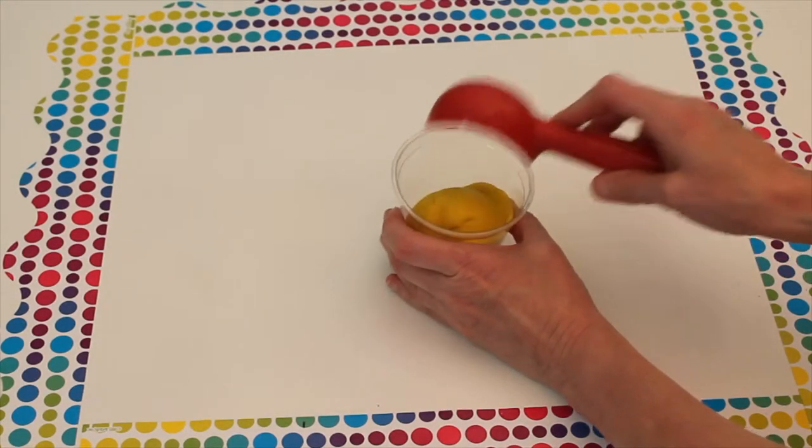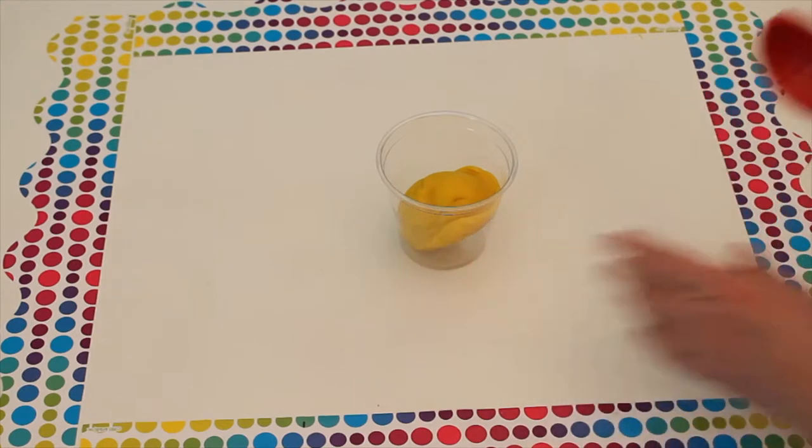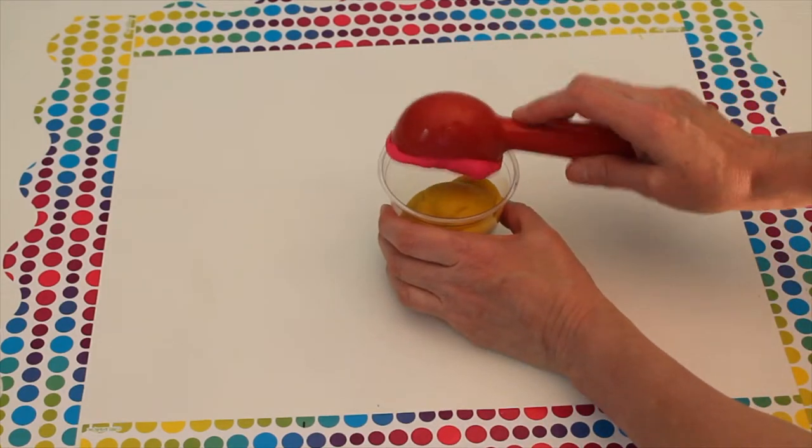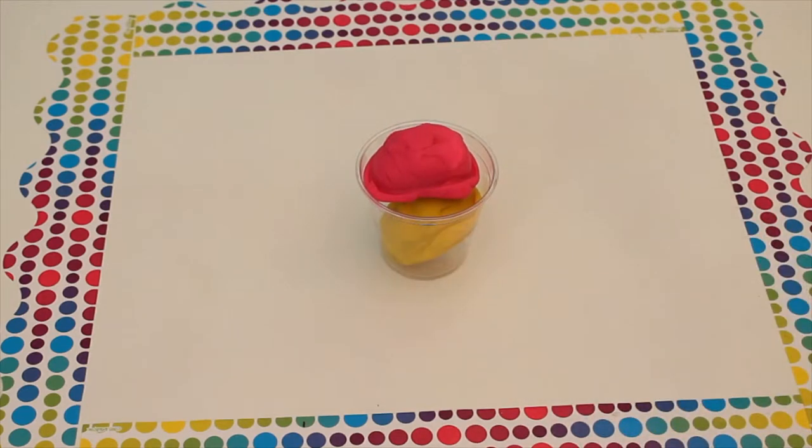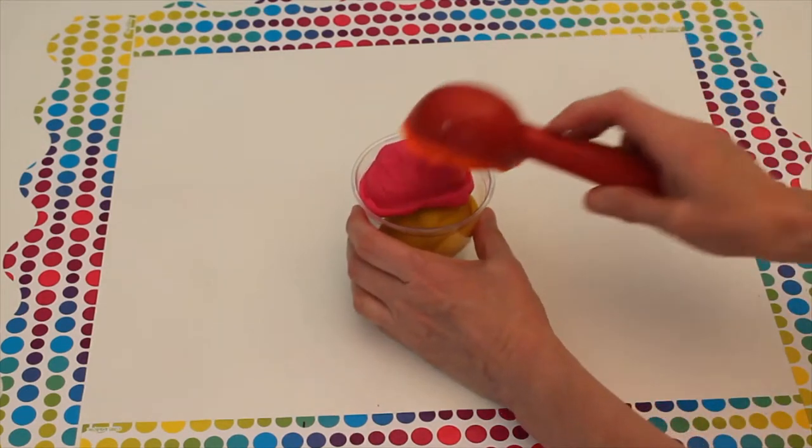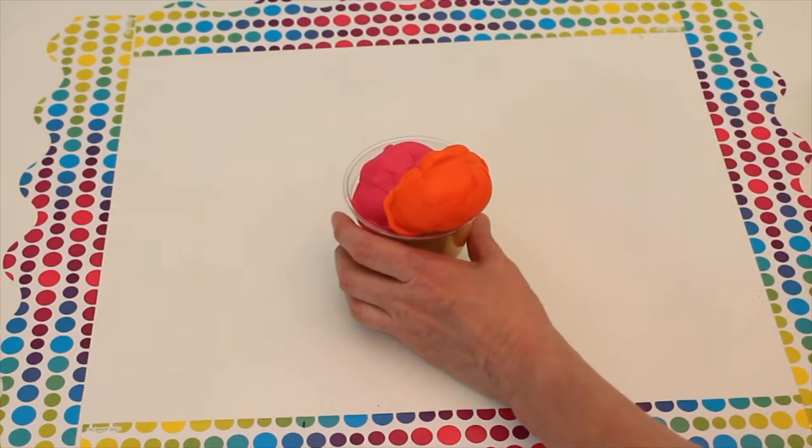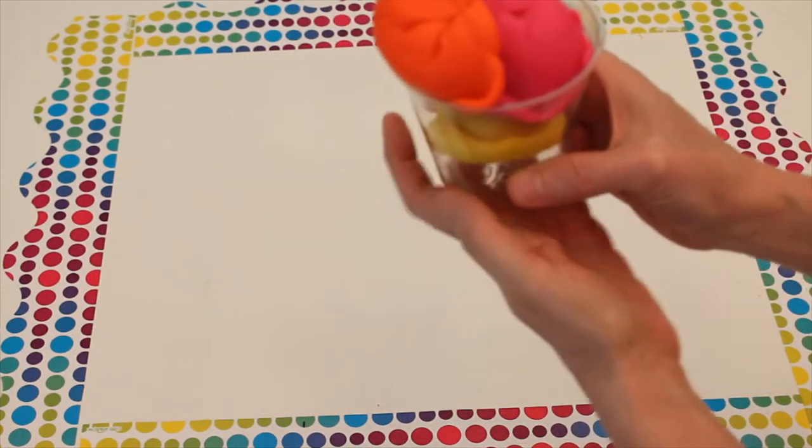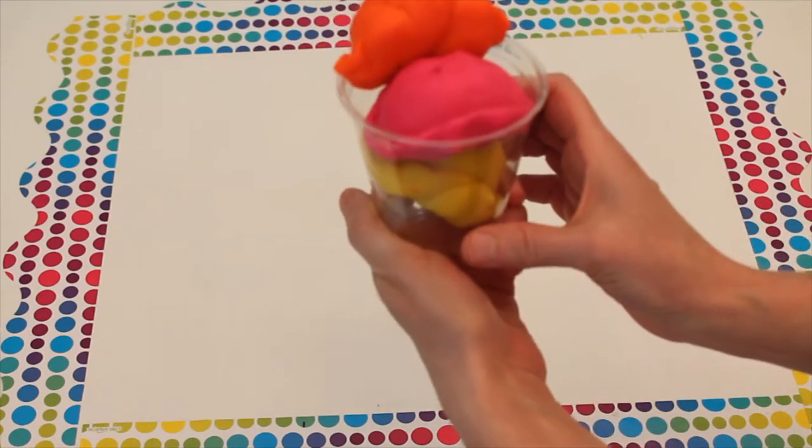Let's start with this yellow scoop. We'll add a pink scoop and then we'll add an orange scoop. Mmm, that looks so yummy. If only it was real ice cream that we could eat.